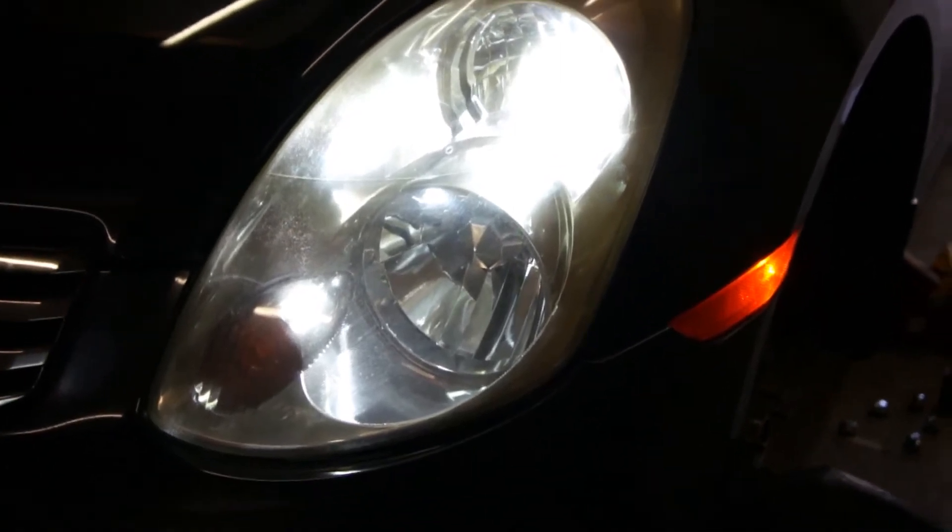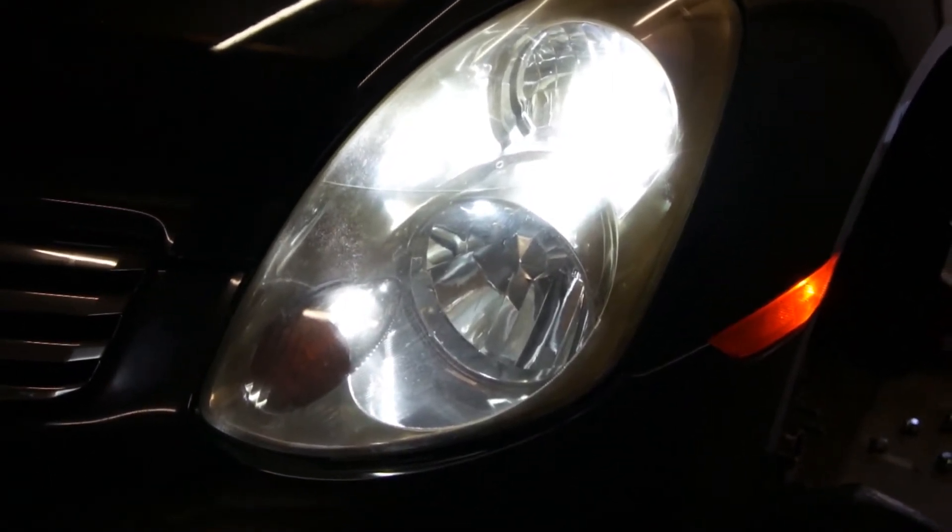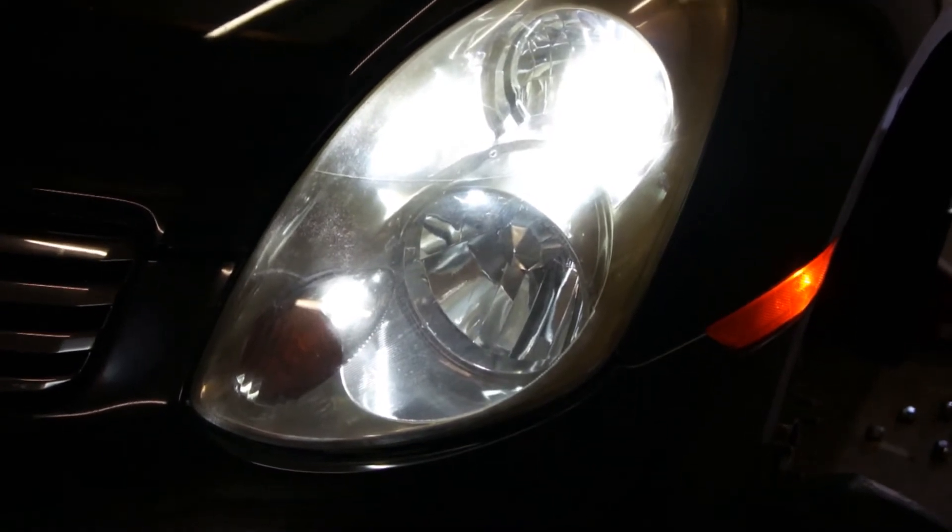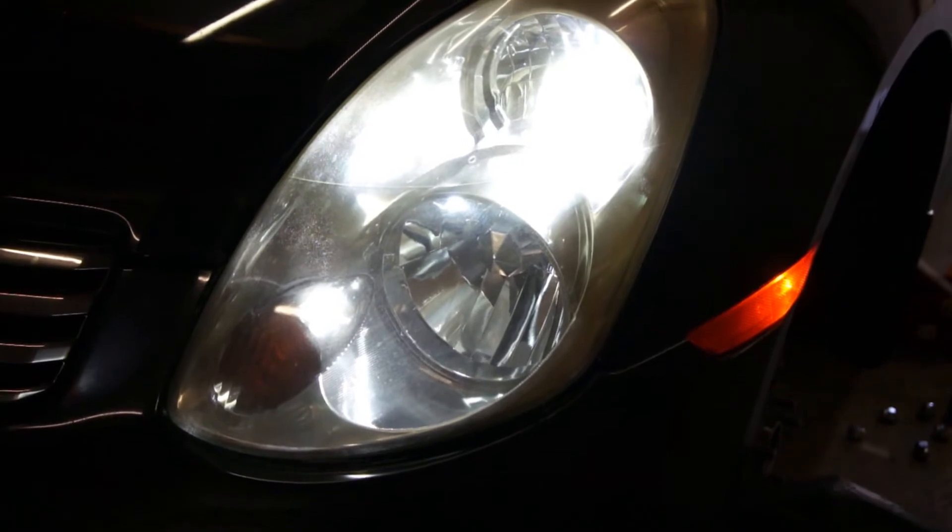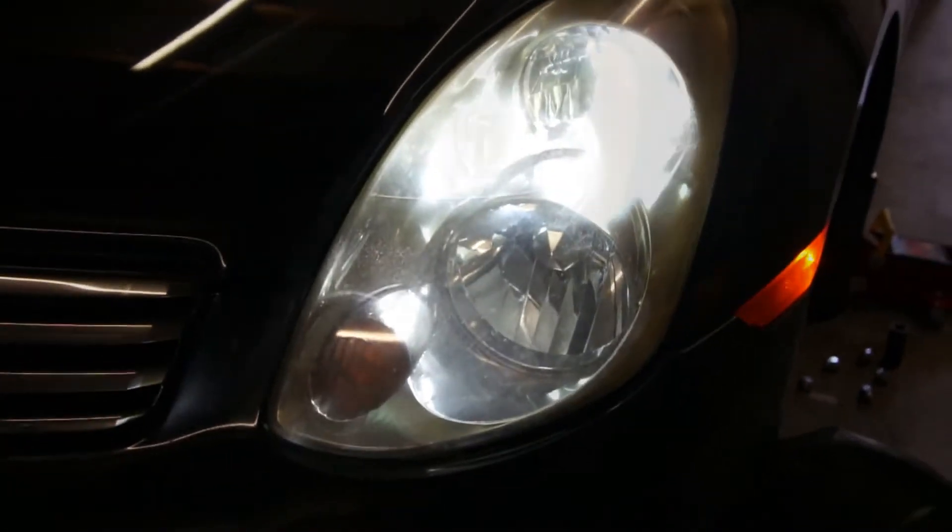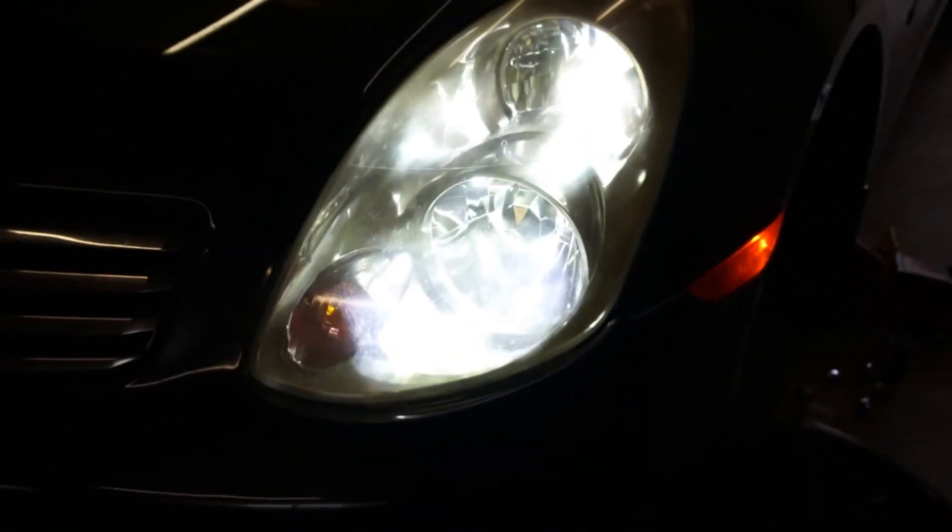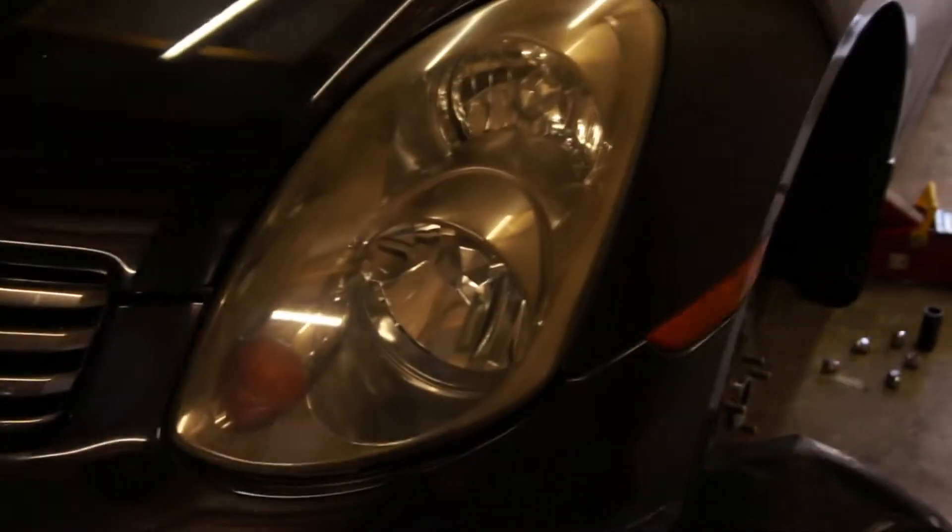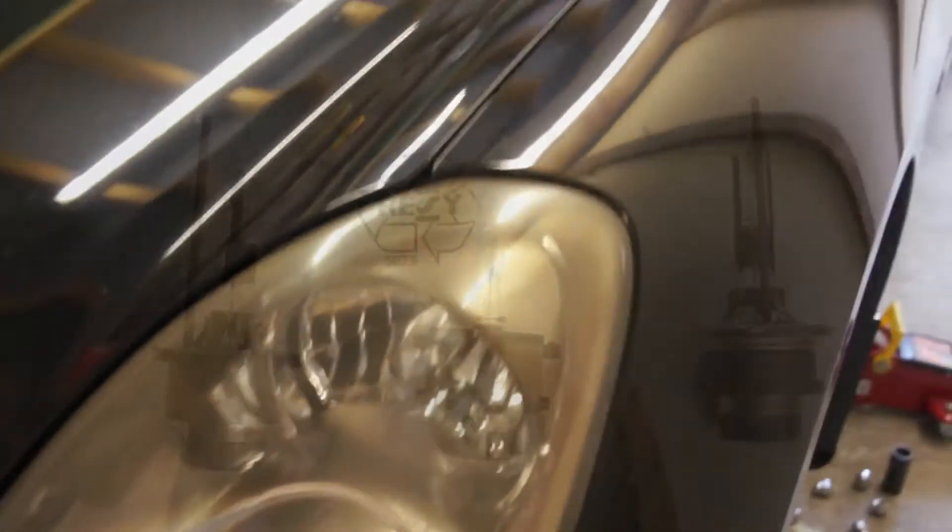I'll go turn on the fog lights and show you the comparison between the 6000K LED fogs that I got on there and the 6000K HID bulb that I just put on. Now the fog lights are on. I don't know if you can pick it out, but the top bulb is definitely more green in hue.